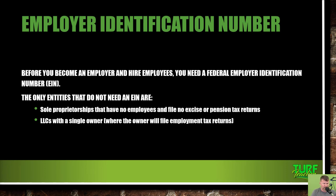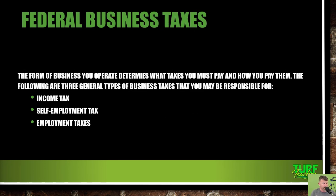Before you become an employer and hire employees, you need a federal Employer Identification Number (EIN). Once you form your corporation you can get one immediately from the IRS website in a matter of minutes — they'll email it to you. The only entities that do not need an EIN are sole proprietors with no employees who file no excise or pension tax returns, and single-owner LLCs where the owner files employment tax returns personally. LLCs can choose to be taxed at corporation level or sole proprietor level.